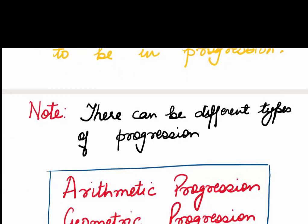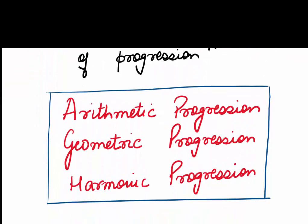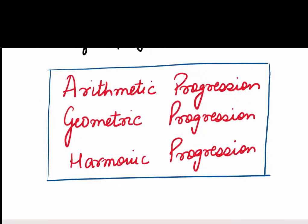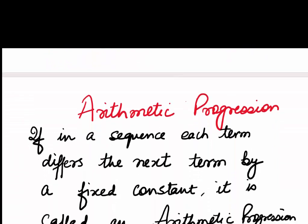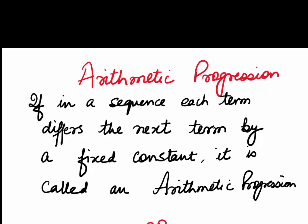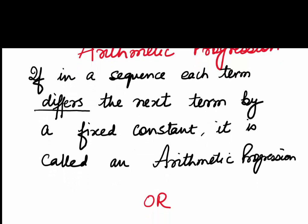There can be different types of progression. We would be studying arithmetic, geometric, and harmonic progression. But today we would be doing arithmetic progression. If in a given sequence, each term differs from the next term by a fixed constant, it is called an arithmetic progression.